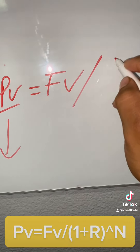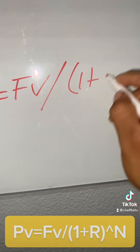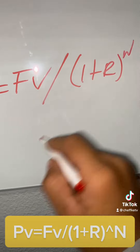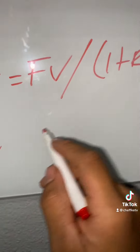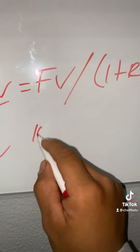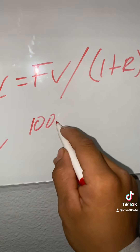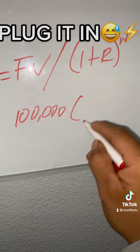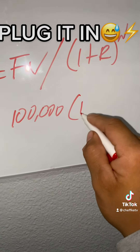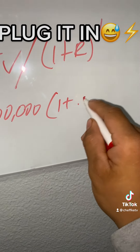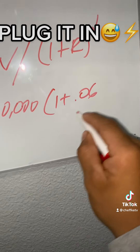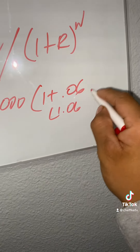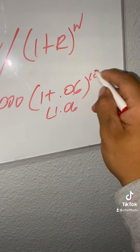Future value divided by one plus the rate to the number of years. So here you go — future value is $100,000, times the same 6%, which is 1 plus 0.06, the same 1.06, and the number of years is 10.